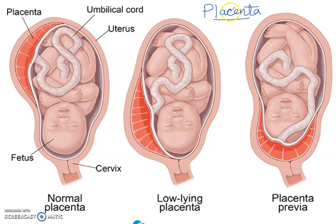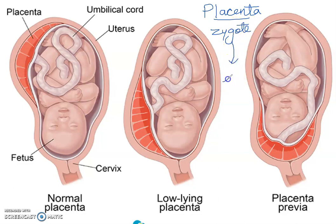So what happens after implantation, students? When a zygote is formed, it will get converted into an embryo, and this embryo will implant in the uterus. This process is called implantation.